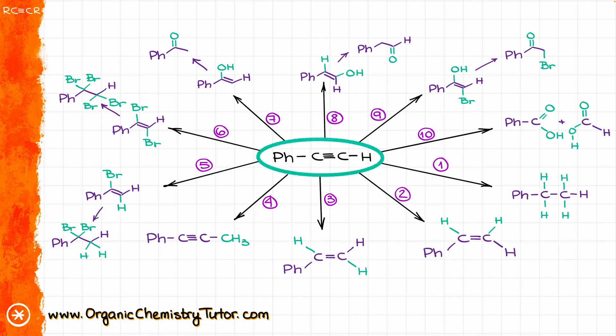Like in my overview of the alkenes, with the link in the description below, I'm going to do the general overview here. I'm not going to go over every single detail of the mechanism for every single reaction. I'm going to focus on the most important features of each reaction. If you want to review the details, I have dedicated tutorials in my alkynes playlist, and I will add the link in the description below as well.